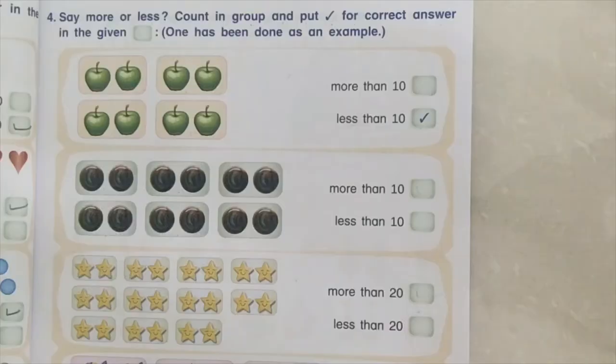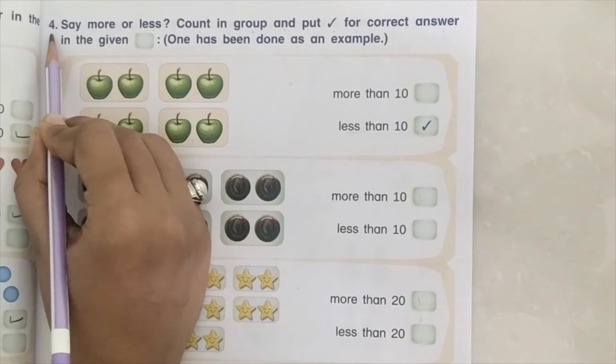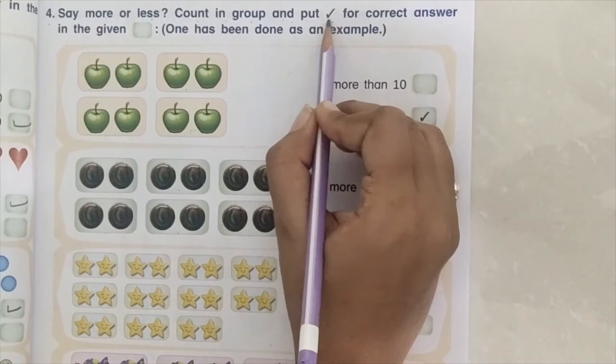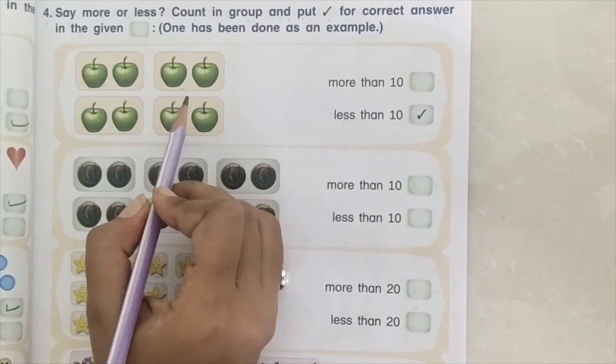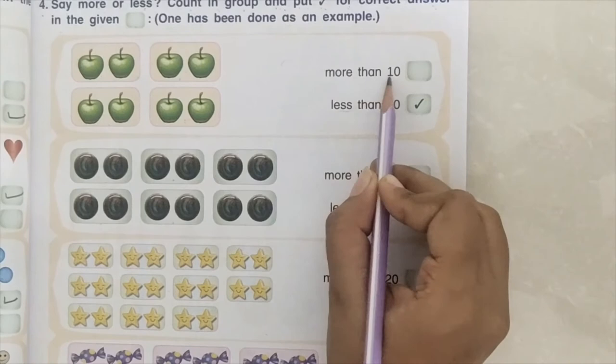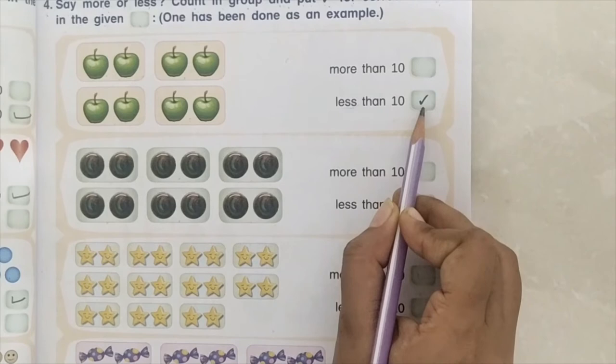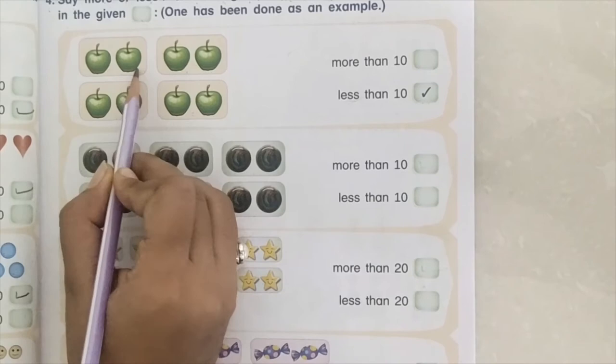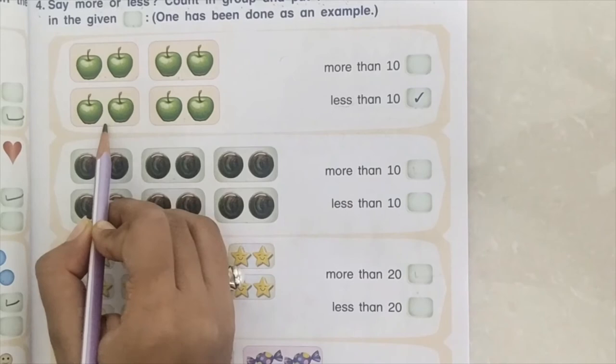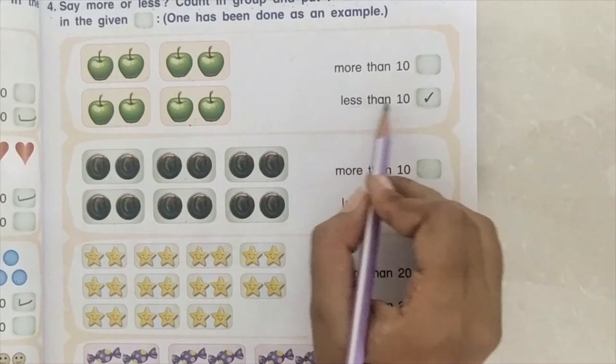Students, now we start our exercise number 4: Say more or less. Count in the group and put a tick for the correct answer in the given box. Yaani aapko yahan pe group mein count karna hai. Same way as the previous exercise — agar 10 se zyada hai toh more than 10 mein right karna hai, agar 10 se kam hai toh less than 10 mein right tick mark karna hai. Par sirf humein yahan pe count group mein karna hai. Here's groups of 2 — first 2, plus 2, 4, plus 2, 6, plus 2, 8. Yaani 10 se kam hue, toh less than 10 mein hum right karenge.